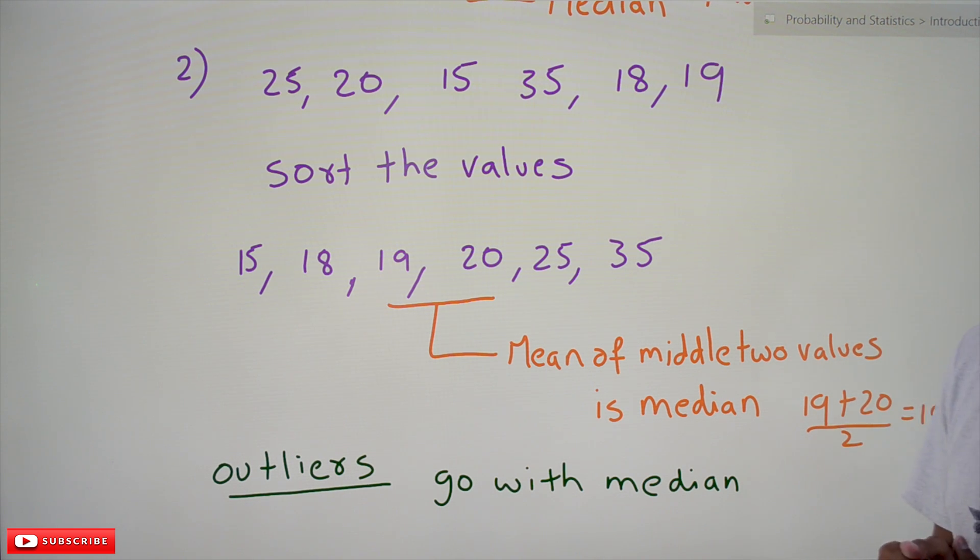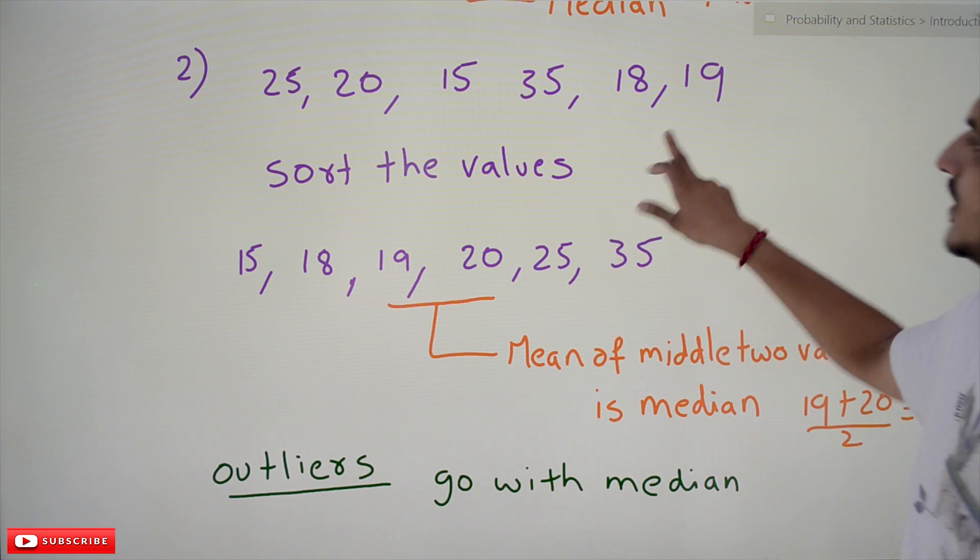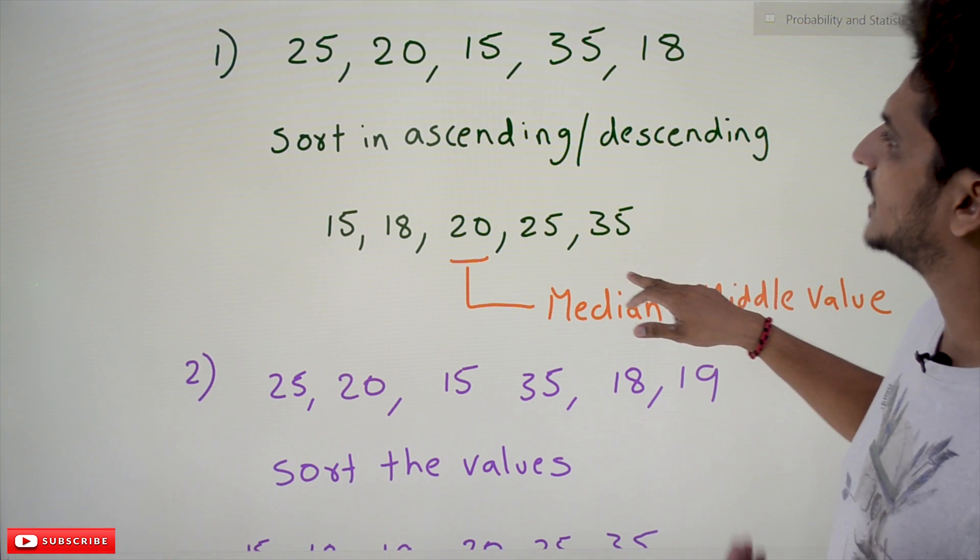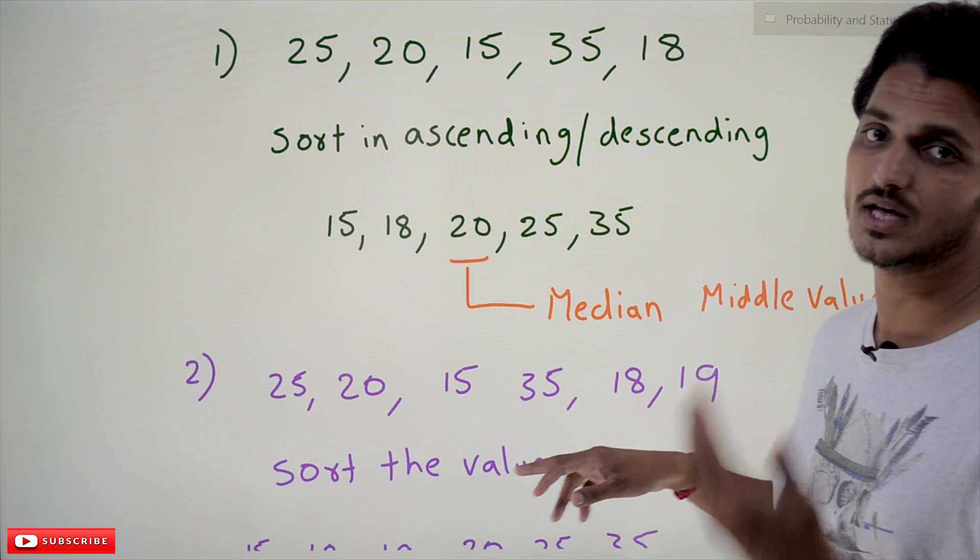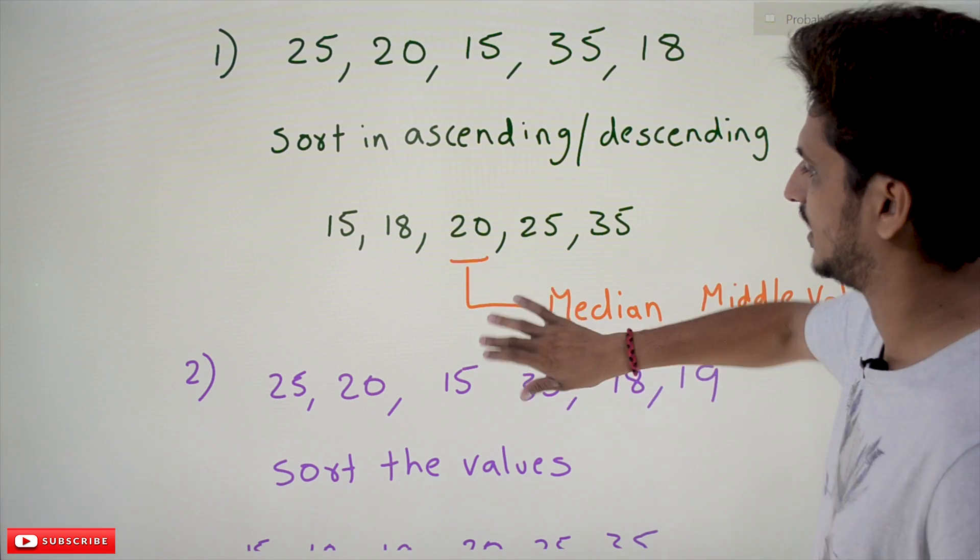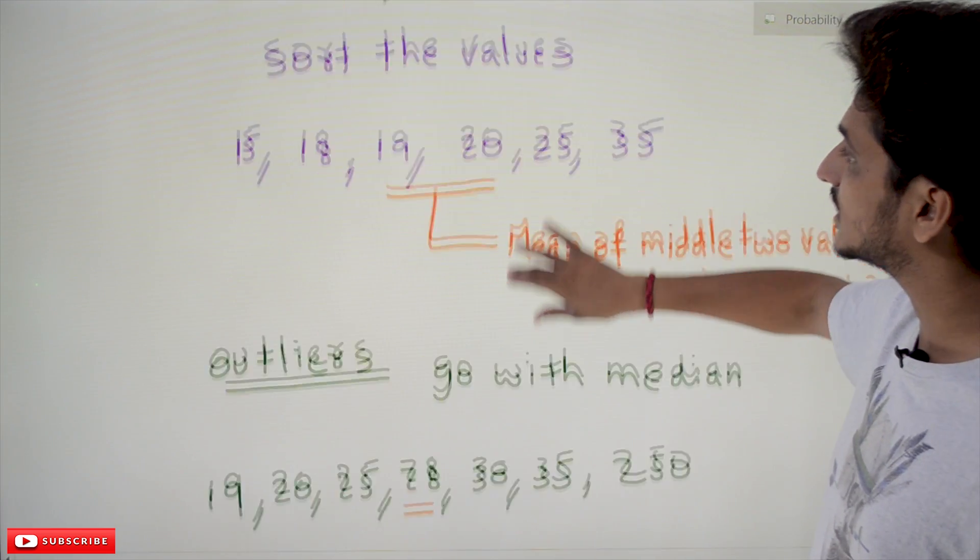So let's try to understand when we need to use this median value, in which situations median is best practice. You know last class when we discussed about the mean value, if your data consists of outliers, let's take an example.